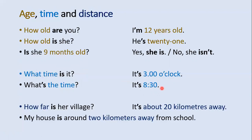Note: 'It's 8:30 o'clock' is wrong. We don't say 'o'clock' with minutes — we don't use 'o'clock' in that way. So just say 'It's 8:30', not 'It's 8:30 o'clock'.